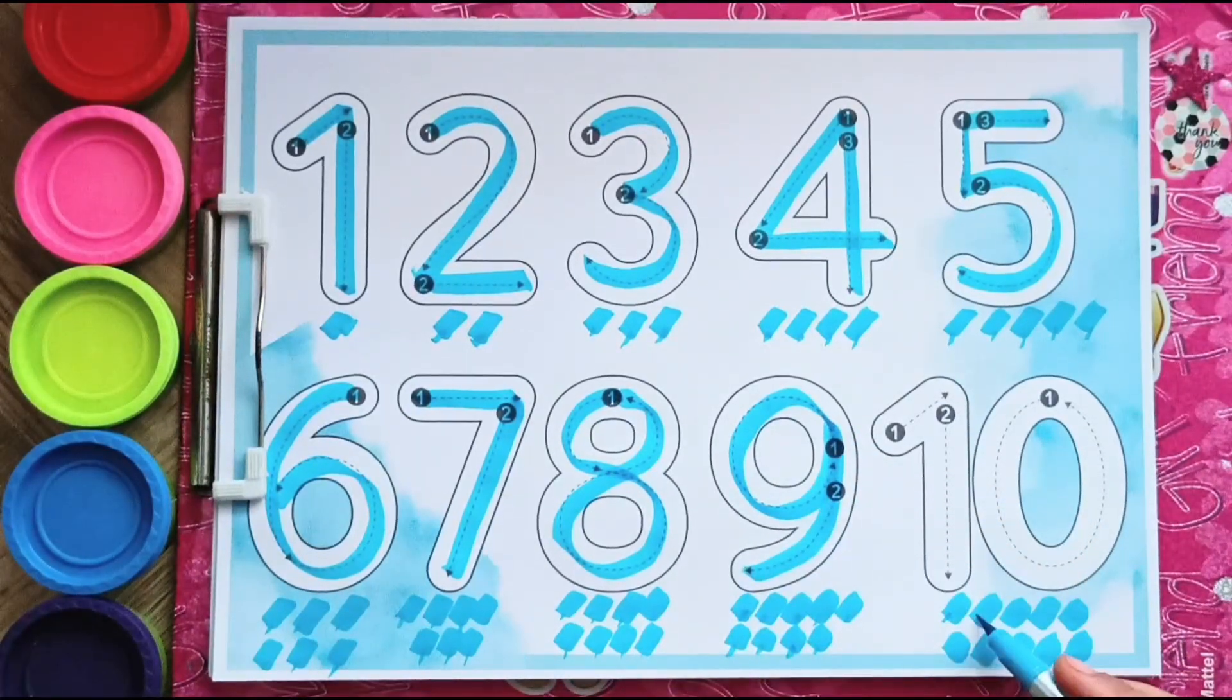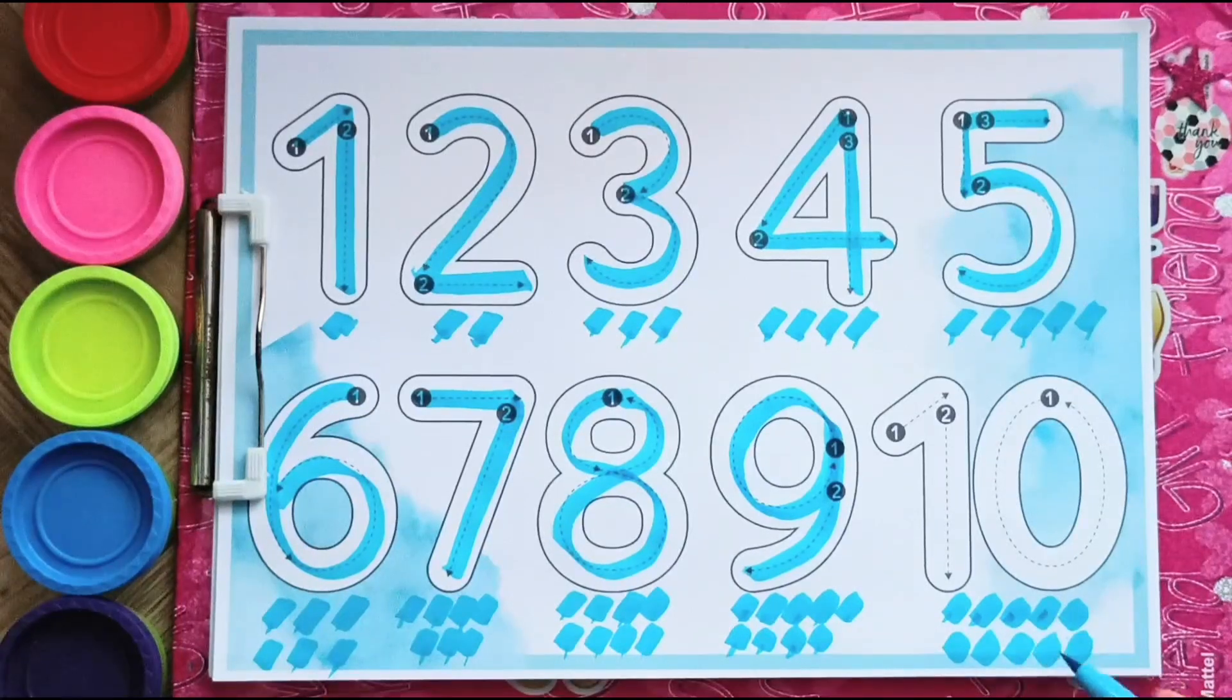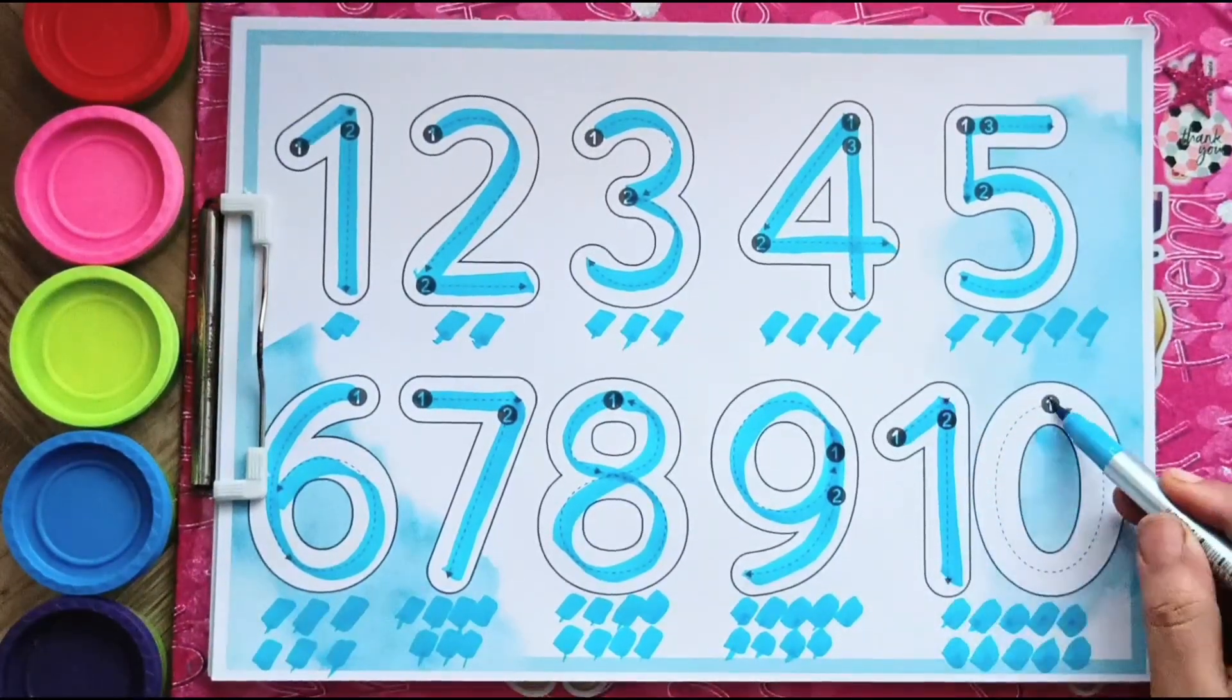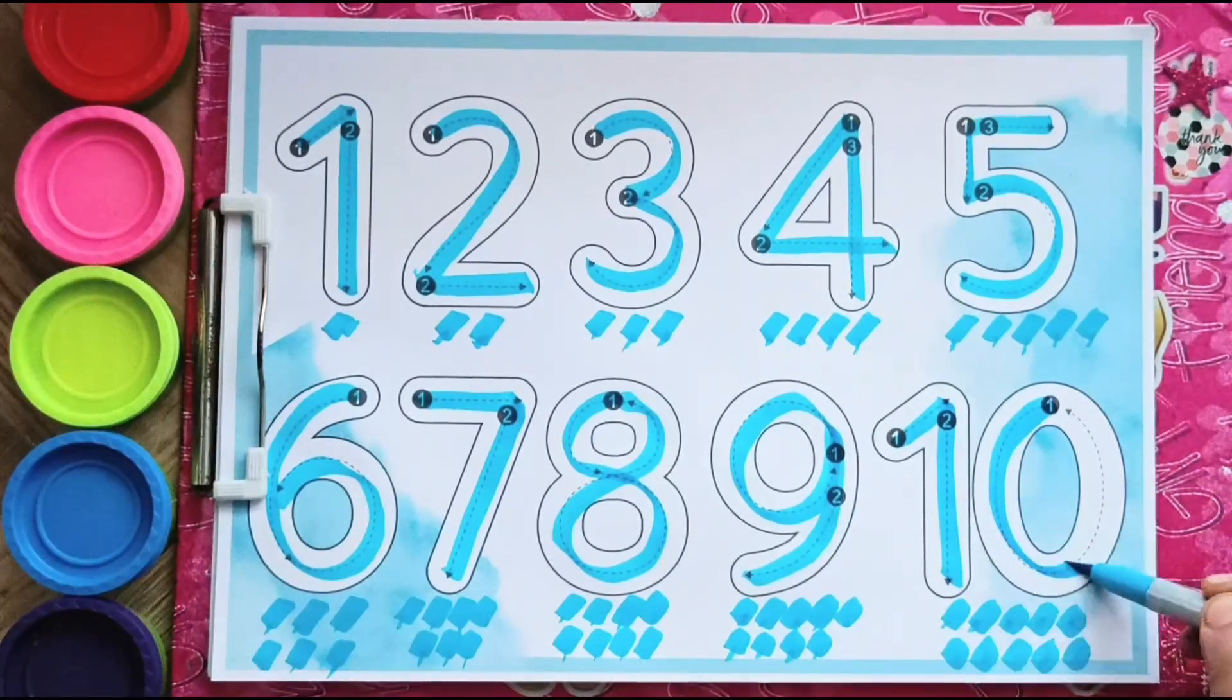And one, two, three, four, five, six, seven, eight, nine and ten. That's one, zero, ten.